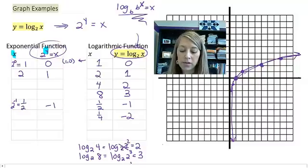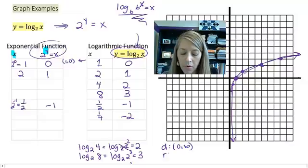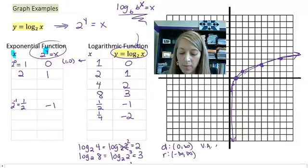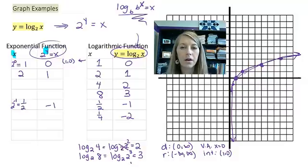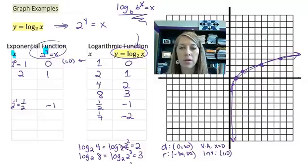Our domain is 0 to infinity, our range is all y values, we have a vertical asymptote at x equals 0, and we have an intercept at 1, 0. Same properties as before. In the next video we're going to practice graphing logarithms more and more.